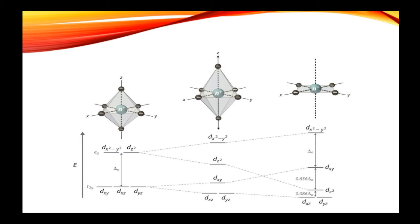Orbitals like dz² and dxz and dyz lie at the lower end of the energy series, whereas dx²-y² and dxy have higher energy. This is the d-orbital splitting pattern in square planar complexes.